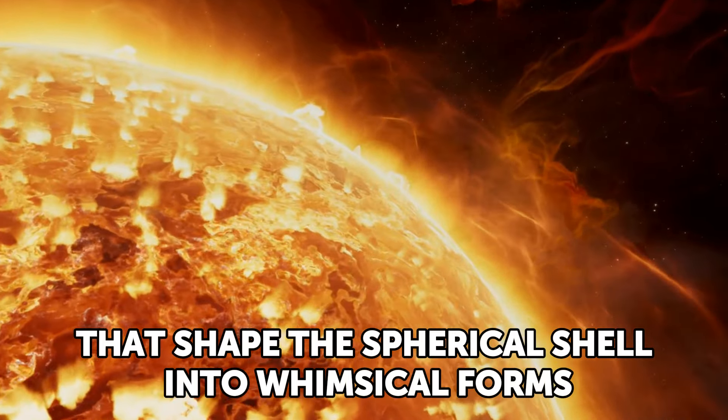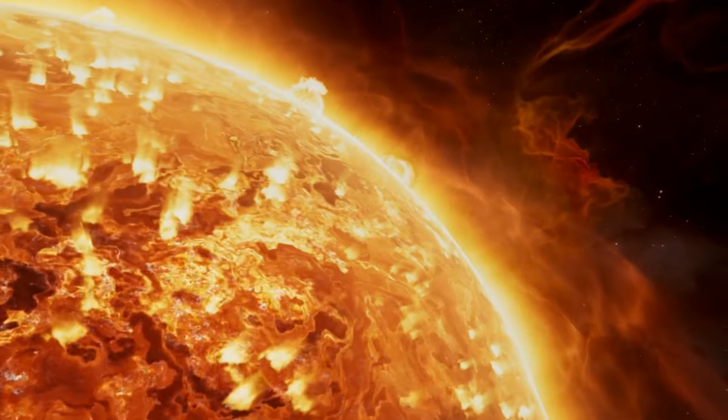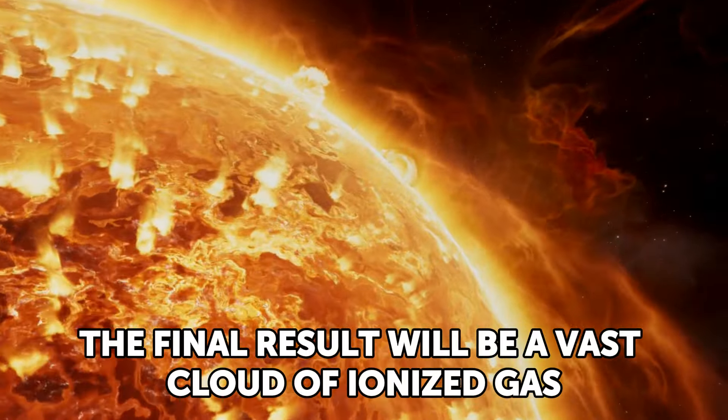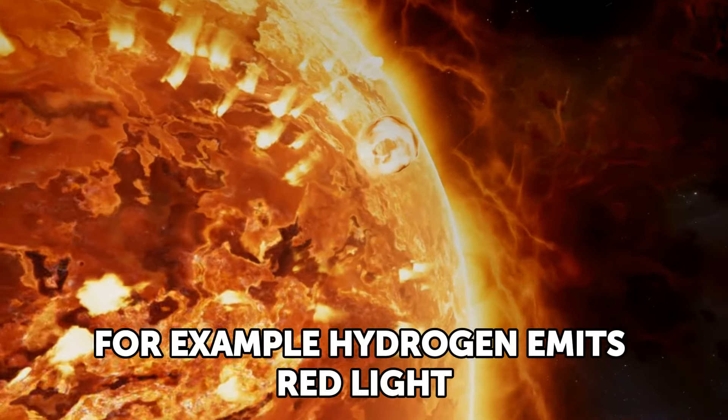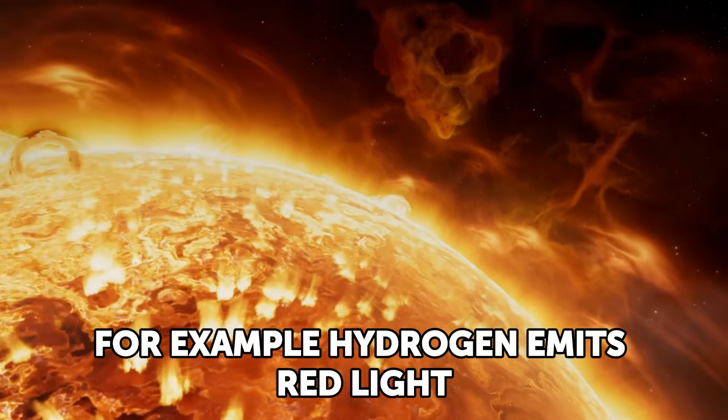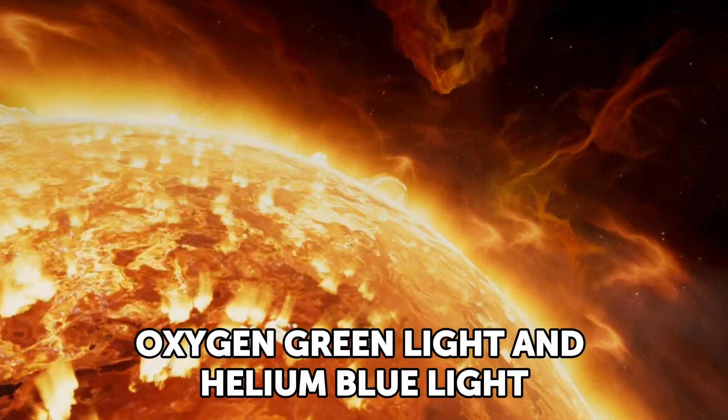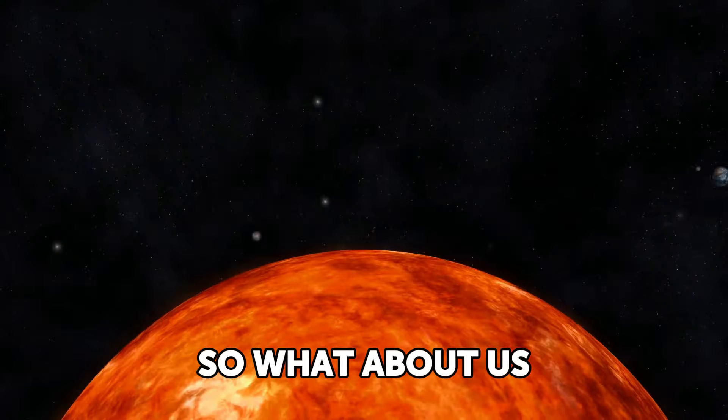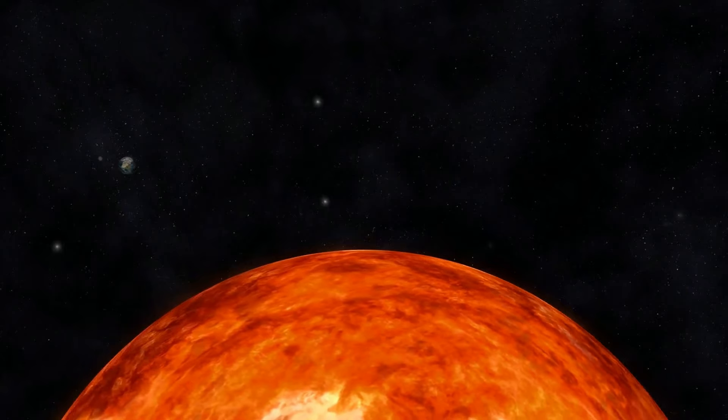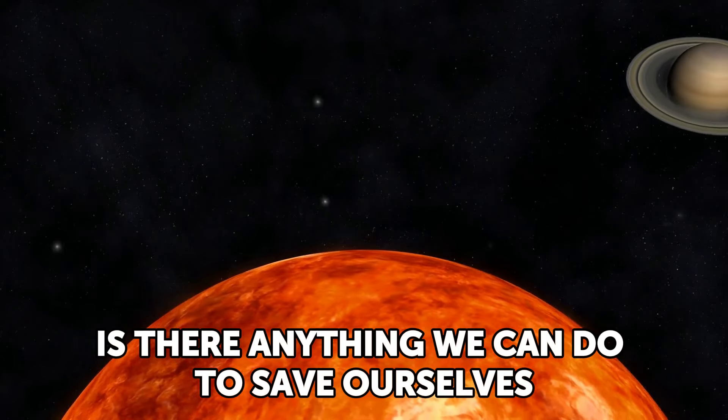But there's more. At some point during the collapse, the sun starts emitting strong winds that shape the spherical shell into whimsical forms. The final result will be a vast cloud of ionized gas known as a planetary nebula, which will shine in bright colors in response to ultraviolet light from the white dwarf. For example, hydrogen emits red light, oxygen green light, and helium blue light. It will be a truly beautiful sight.